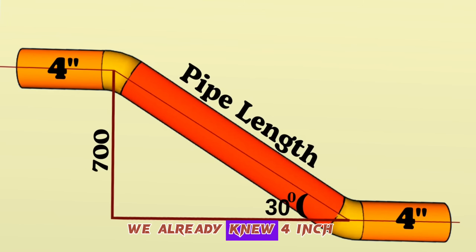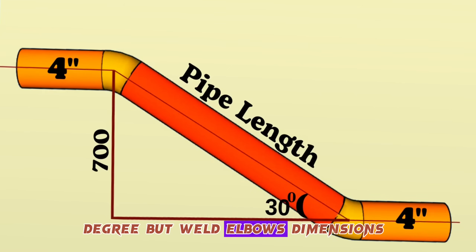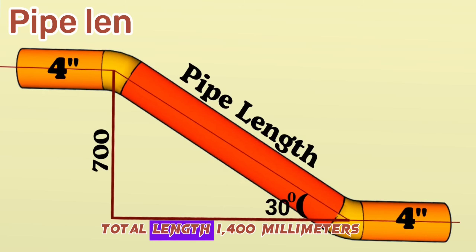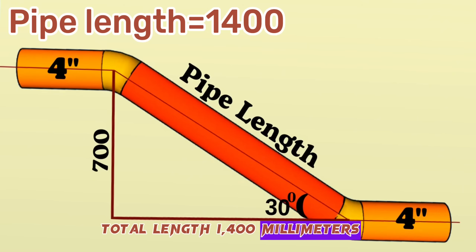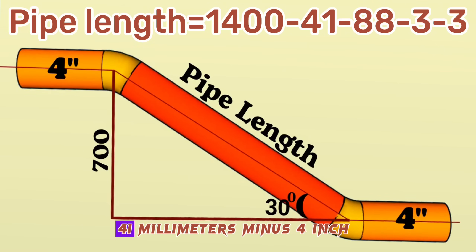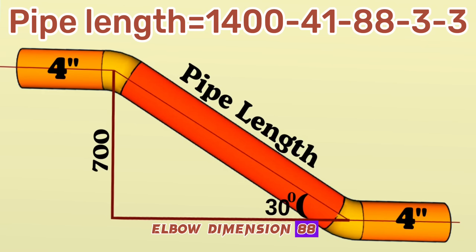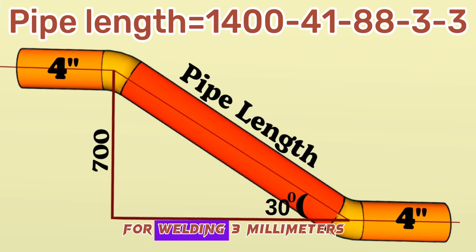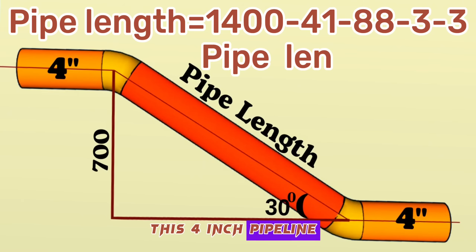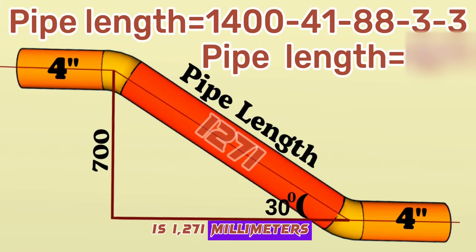We now know the dimensions of both the 4-inch 30-degree and 60-degree butt-weld elbows, and can calculate the red-colored pipe section length. Pipe length = total length 1400mm − 30° elbow dimension 41mm − 60° elbow dimension 88mm − 2 × welding gap 3mm. The calculated length of the red pipe piece in this 4-inch pipeline is 1271 millimeters.